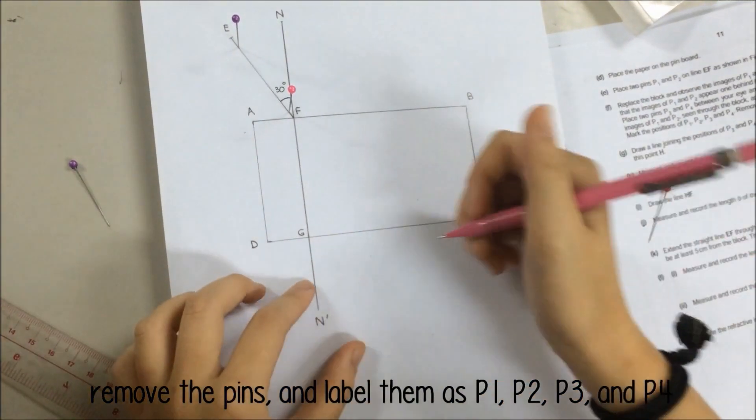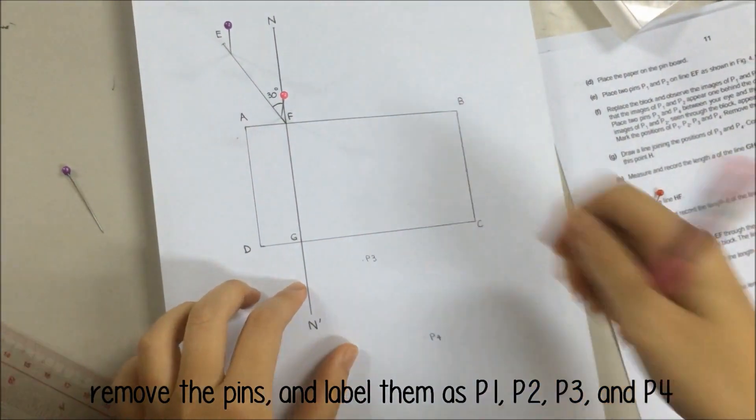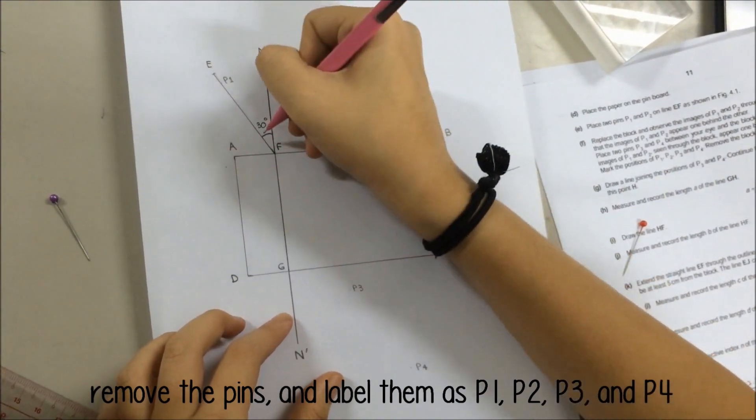Step 8: Remove the four pins and label the point near point E as point 1, the point near point F as point 2, and the two new points as point 3 and point 4.